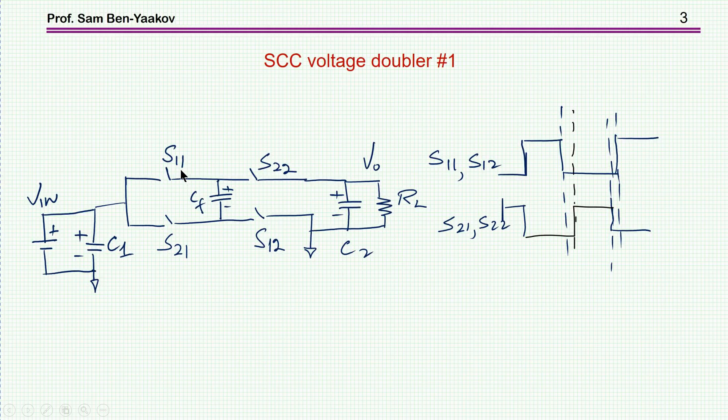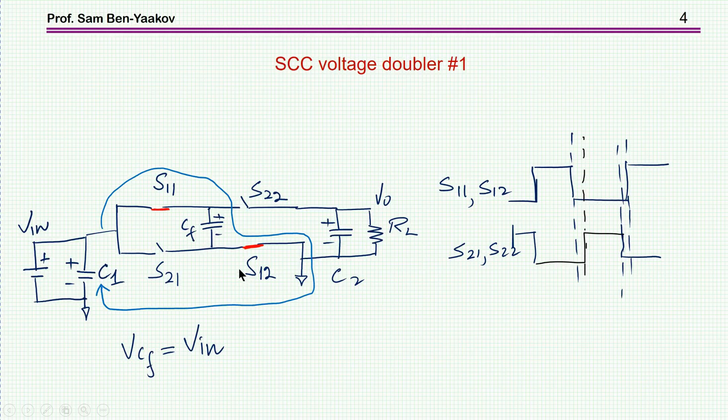These switches are turned on in pairs. S11 and S12 are turned on at the same time, and then S21 and S22 are turned on at the same time. There is a dead time between the operation of the switches such that there will be no short circuit. Let's start with the operation of S11 and S12 which operate together. This switching sequence is connecting C sub f, the flying capacitor, in parallel to the input. So this capacitor will be eventually charged to the input voltage.